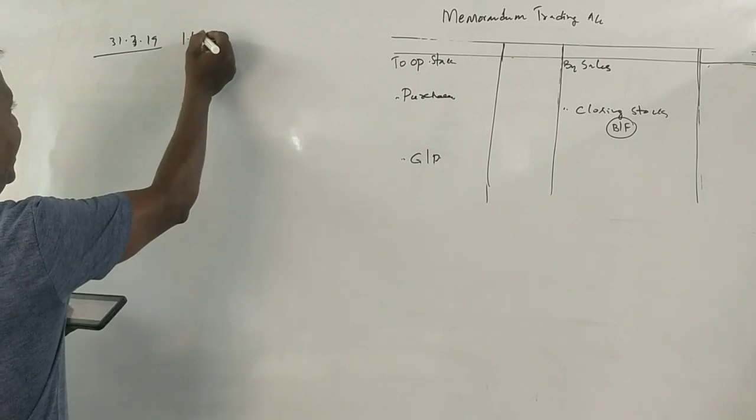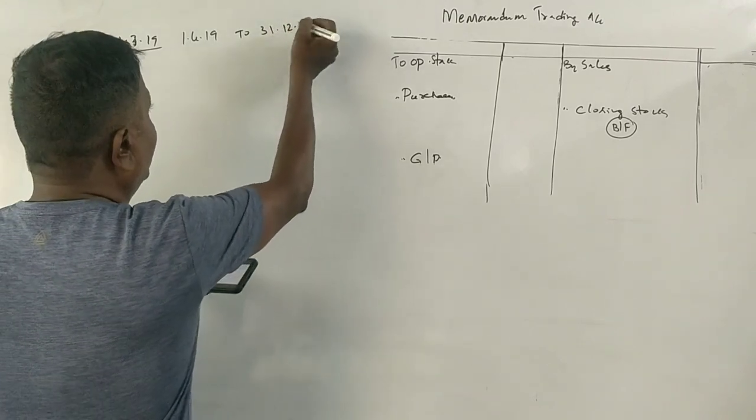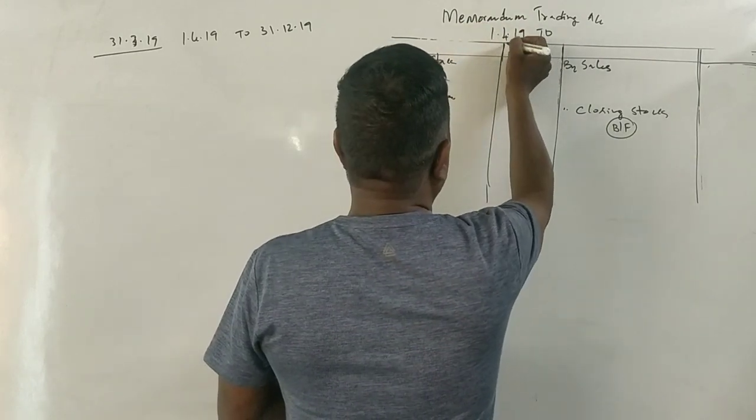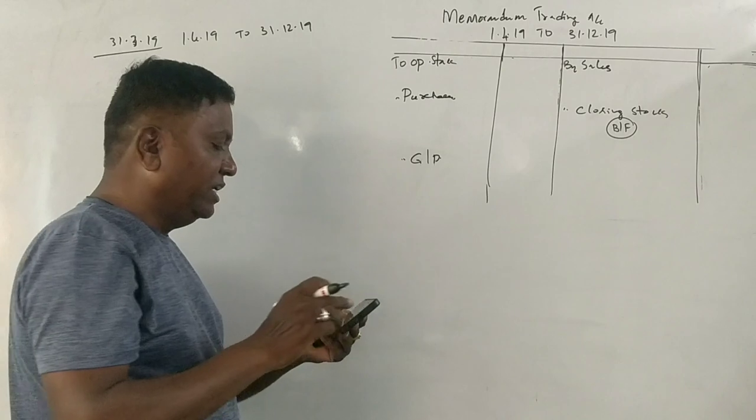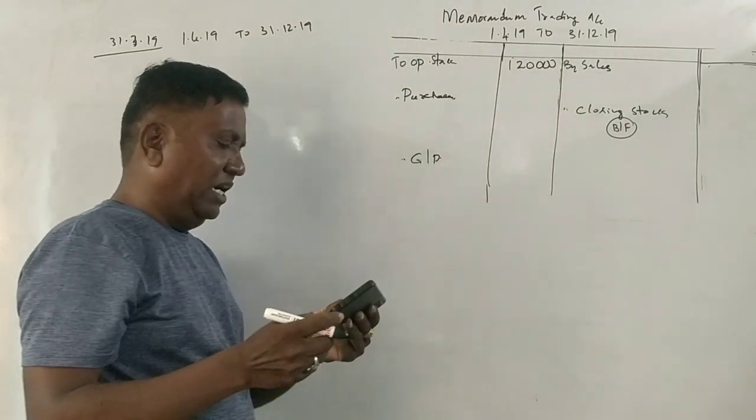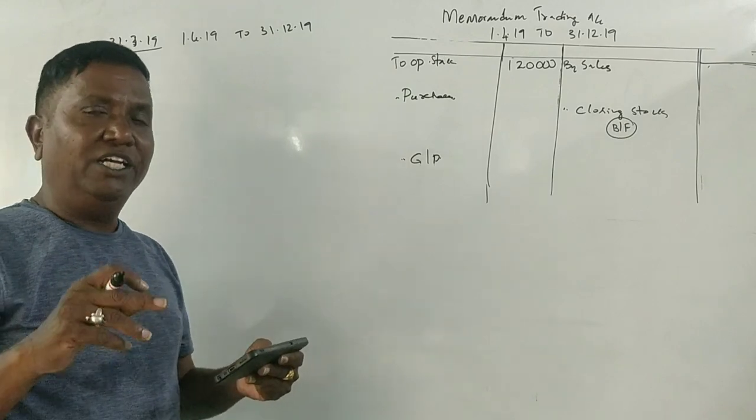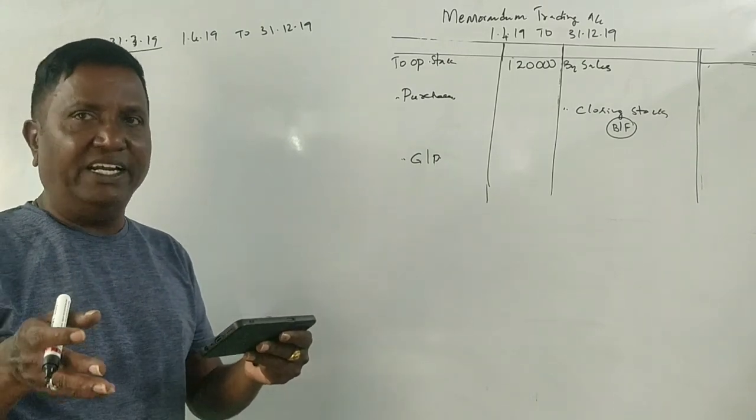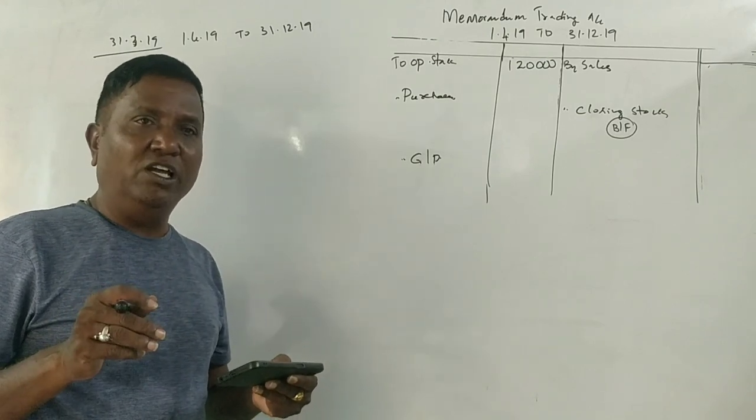Let me read through the data. Stock on 1-4-2019 is 1,20,000 rupees. Sundry debtors on 31-3-2019 is 3,20,000 rupees. On 31st December, the fire accident occurred. Now let me reveal the debtors.